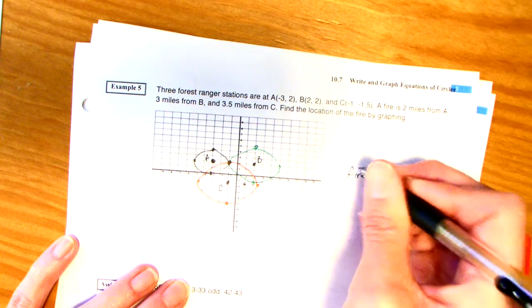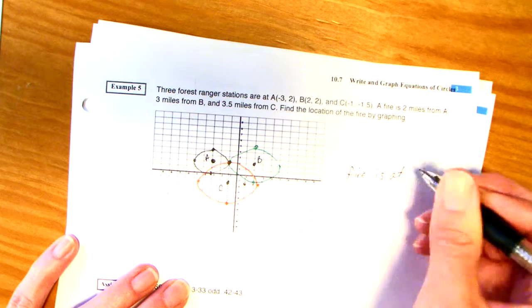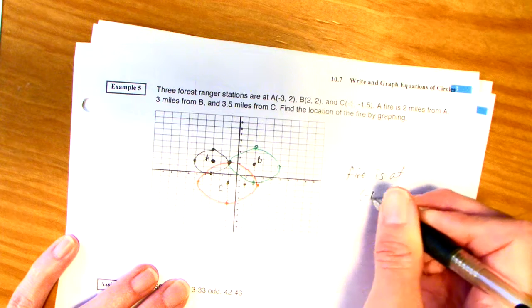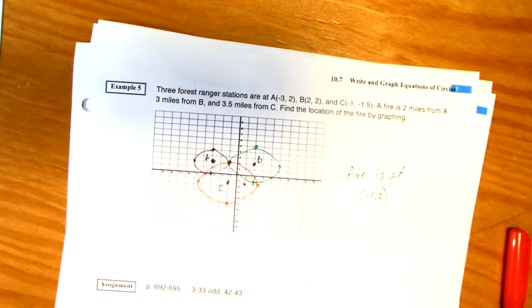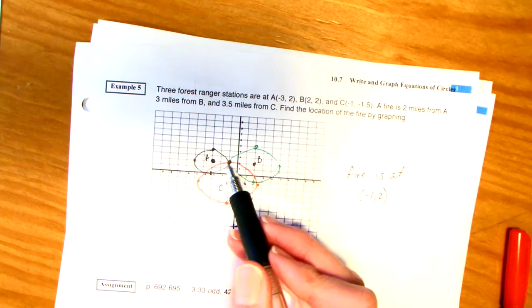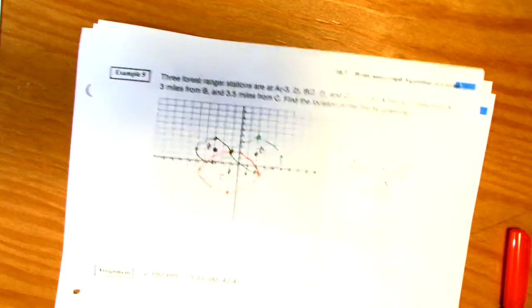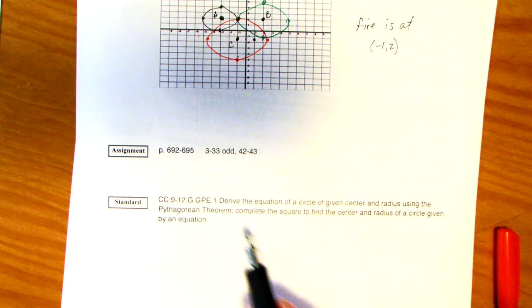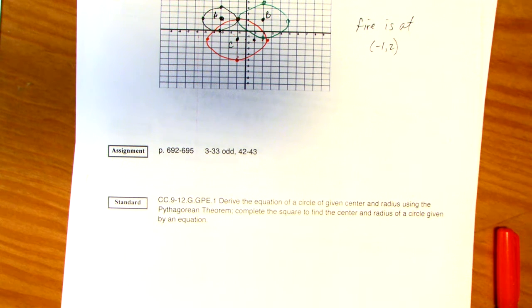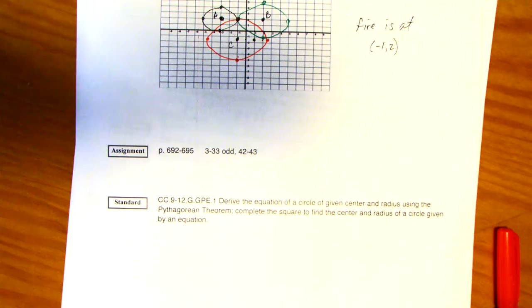So, they're using the idea of the definition of a circle that every point on the circle is equal distance from the radius. Alright. There's our homework. There's our common standard. And, we are done with chapter 10. Pretty excited about that, aren't you? Have a nice evening.